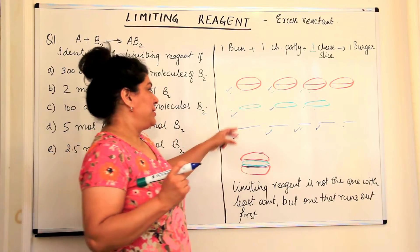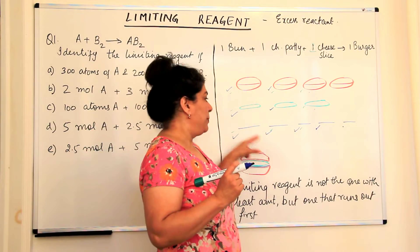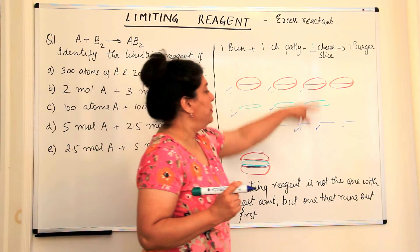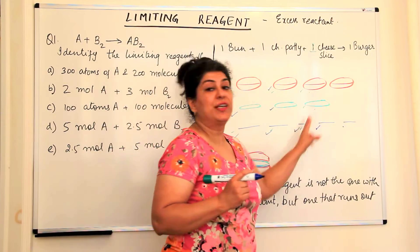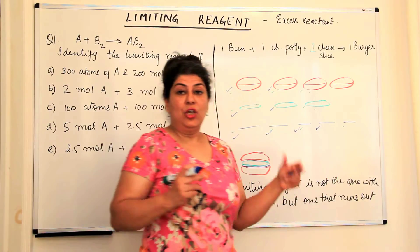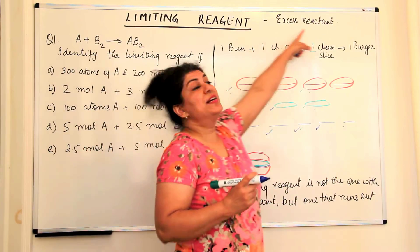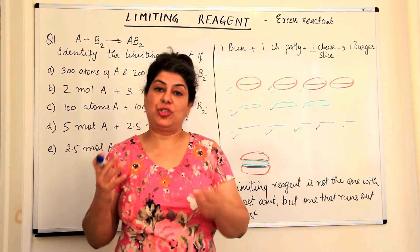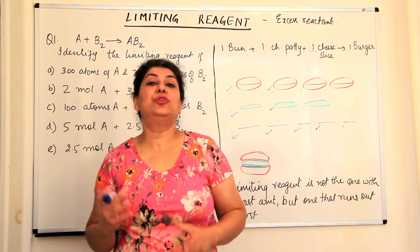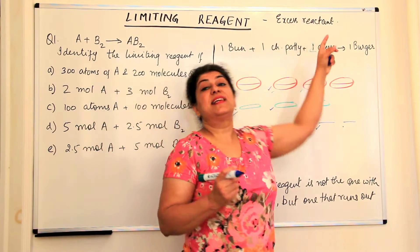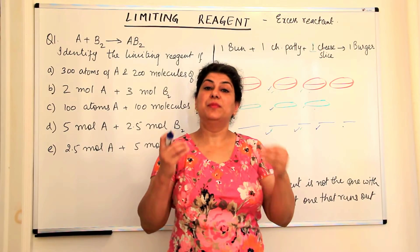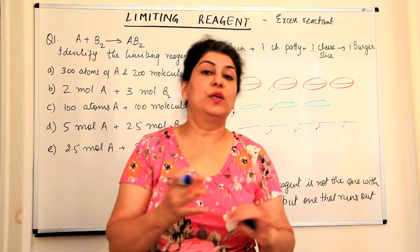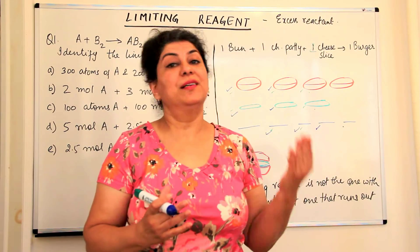Now, all other reagents after the limiting reagent is used up — in the first case, we made three burgers and were left with two cheese slices. That was the excess reactant. The reactant that is left unused is known as the excess reactant. After the limiting reagent stops the reaction, whatever excess reactant is left over would not participate in the chemical reaction.